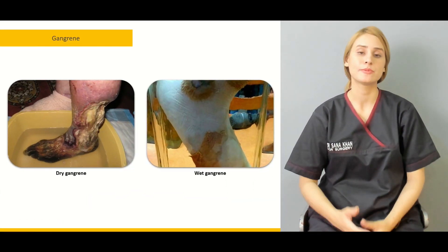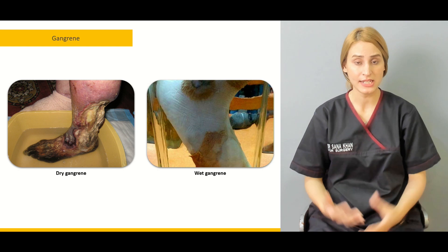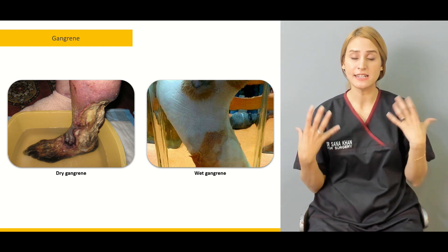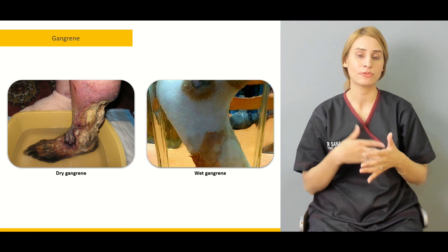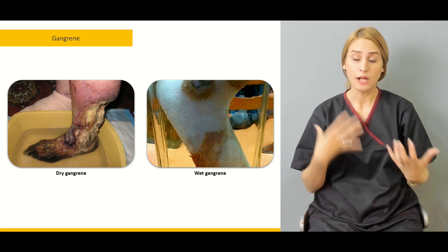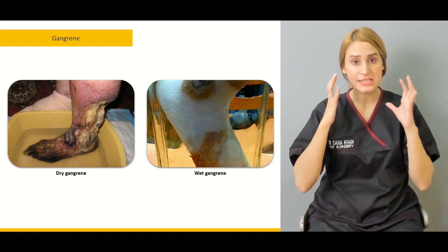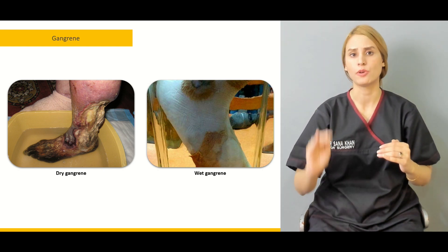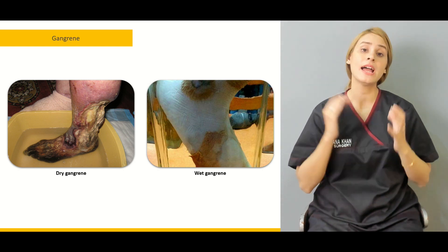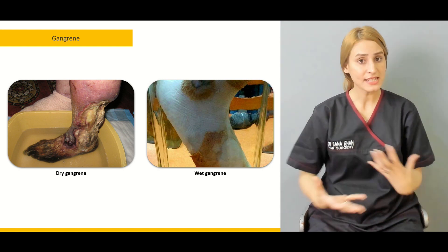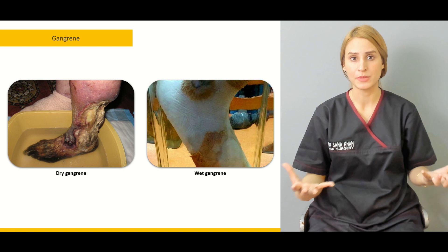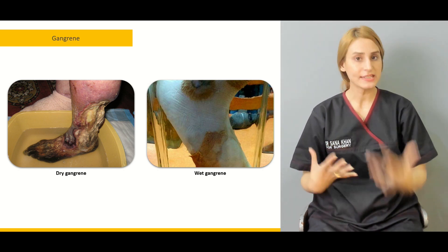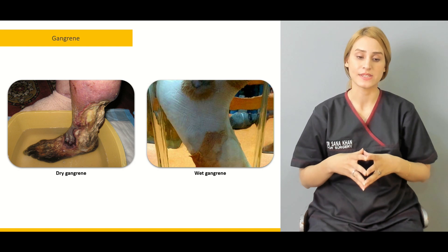We'll be talking about wet gangrene and dry gangrene, their consequences, and their distribution — whether it is proximal to distal or distal to proximal. We'll also be talking about the causative vectors and the phenomena behind the development of gangrene, particularly peripheral vascular disease and atherosclerosis.